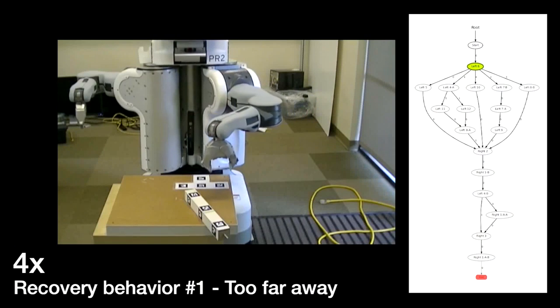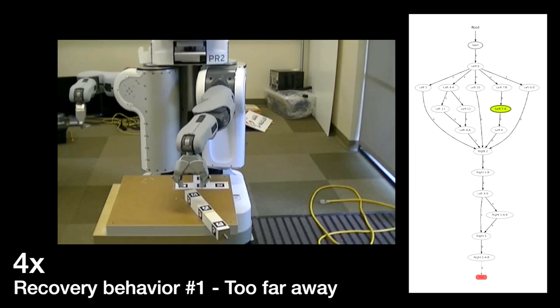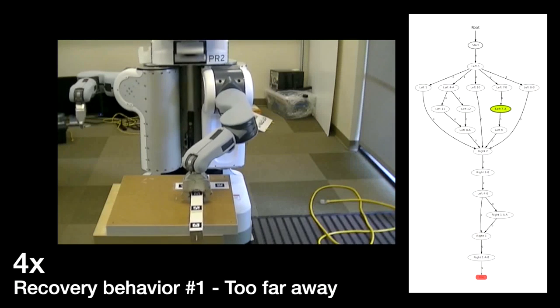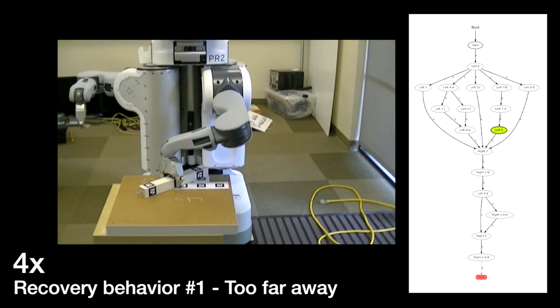Now, the interactive corrections can be automatically segmented and added to the finite state machine, shown on the right. This additional data allows the robot to recover in novel situations that are similar to the failure seen earlier.